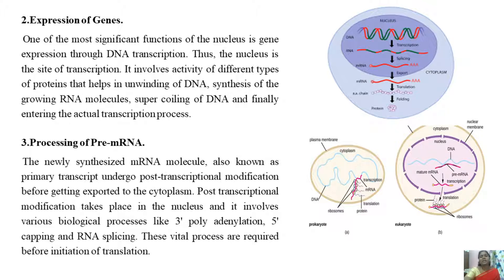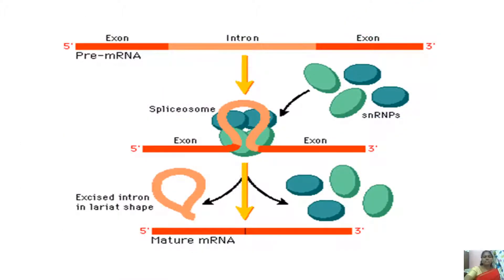The third function is processing of pre-mRNA. The newly synthesized mRNA molecule, also known as the primary transcript, undergoes post-transcriptional modification. Before getting exported to the cytoplasm, post-transcriptional modification takes place in the nucleus and involves various biological processes like 3' polyadenylation, 5' capping, and RNA splicing. These vital processes are required before the initiation of protein synthesis or translation. This is the pre-mRNA before processing, where you have exon, intron, and exon.